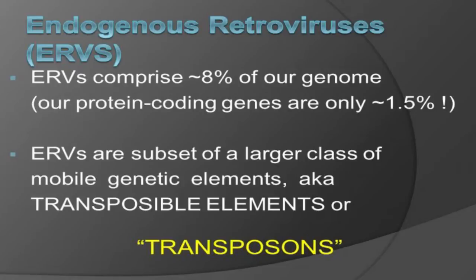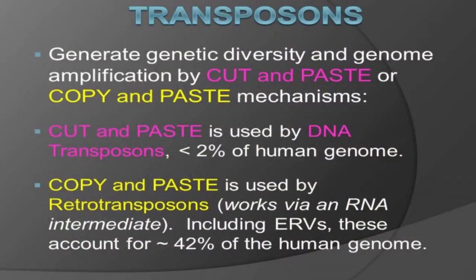Endogenous retroviruses are a subset of a larger class of mobile genetic elements, also known as transposable elements or transposons, which means they move things around in the DNA. Their purpose in evolution seems to be to generate genetic diversity, using a cut-and-paste mechanism or a copy-and-paste, just like word processing. Cut-and-paste is a rearrangement, but copy-and-paste is a duplication that makes something new, expanding or amplifying the genome. DNA transposons that cut and paste are less than 2% of our genome, but copy-and-paste is used by retrotransposons, which work via an RNA intermediate — getting copied into DNA and inserted somewhere else. Including endogenous retroviruses, these account for about 42% of our DNA.